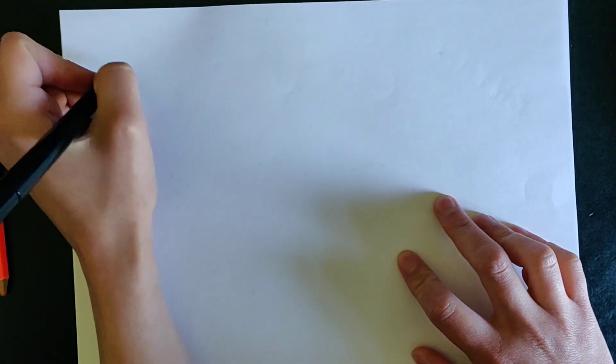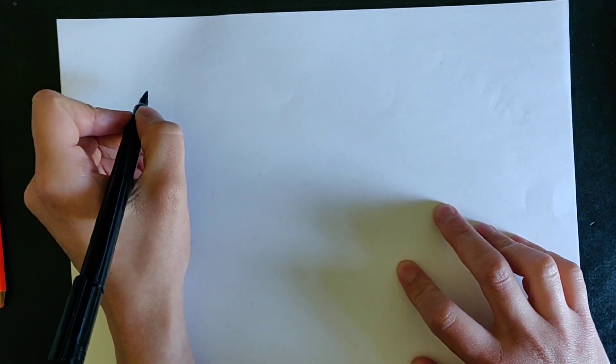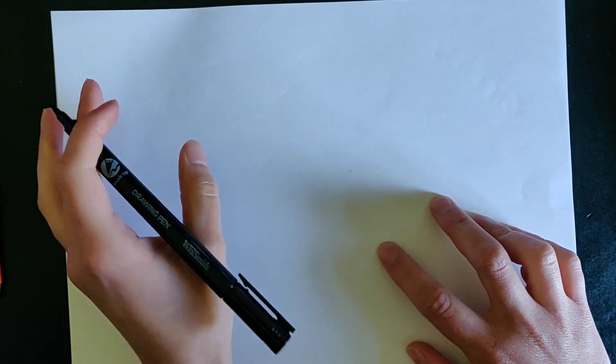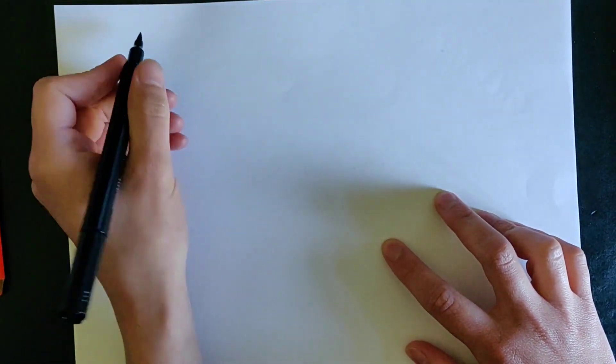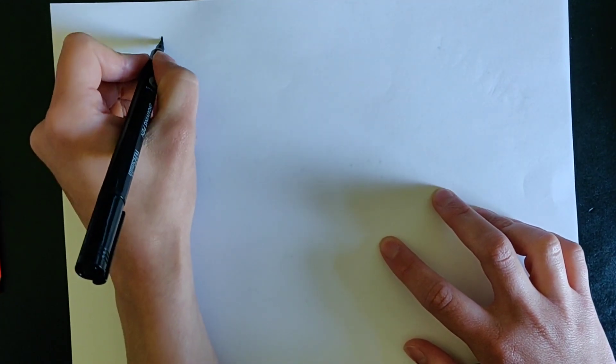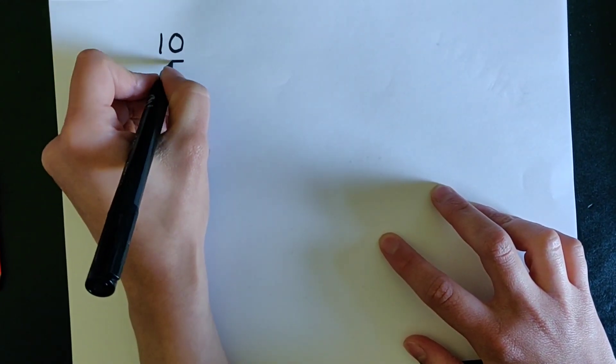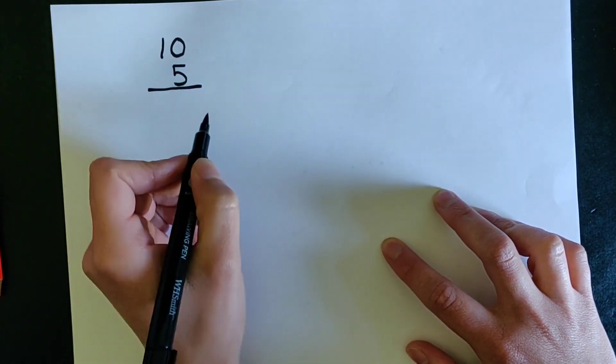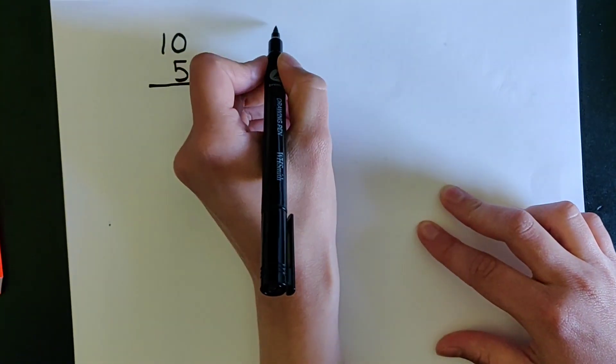My favorite method of doing addition is by doing column addition. This is by far the quickest and it's the method you should be using at home because it works from the smallest numbers to the biggest numbers. Let's try this.